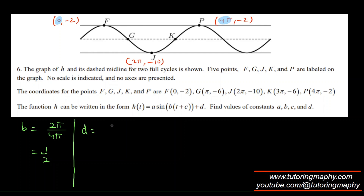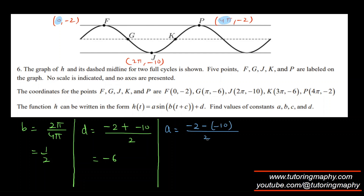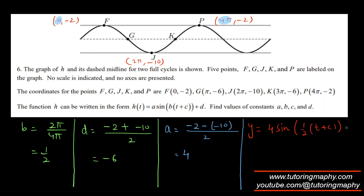The midline D: maximum is −2, minimum is −10, so D = (−2 + (−10)) / 2 = −12/2 = −6. Taking A as positive: |A| = (max − min) / 2. That's (−2 − (−10)) / 2 = 8/2 = 4.